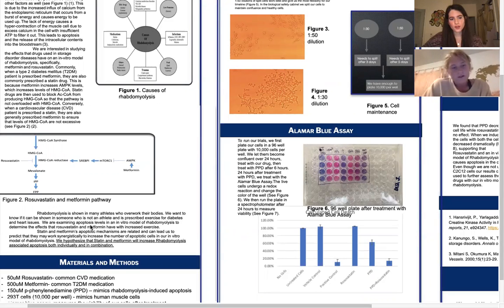So these statin and metformin, they both have been shown to cause apoptosis in previous literature. And this leads us to believe that when they are prescribed together or even alone with exercise, that they will increase the number of apoptotic cells in our in vitro model of rhabdomyolysis. So we hypothesize that rosuvastatin and metformin will increase rhabdomyolysis associated apoptosis both individually and in combination.